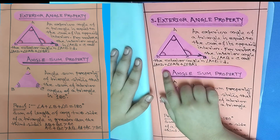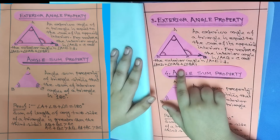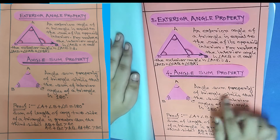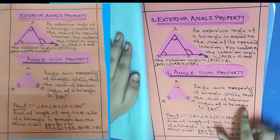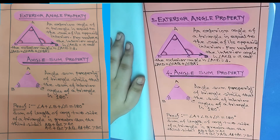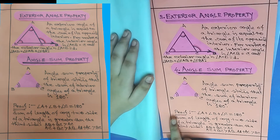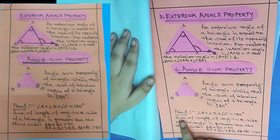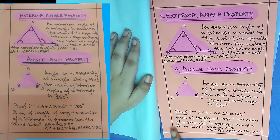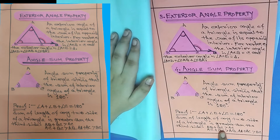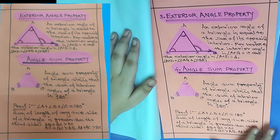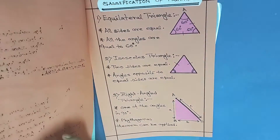The angle sum property of a triangle states that the sum of interior angles of a triangle is 180 degrees — it always has to be 180 degrees. Proof: angle A plus angle B plus angle C equals 180 degrees. Also, the sum of the lengths of any two sides of a triangle is greater than the third side: AB + BC > AC, AC + BC > AB, and AB + AC > BC.